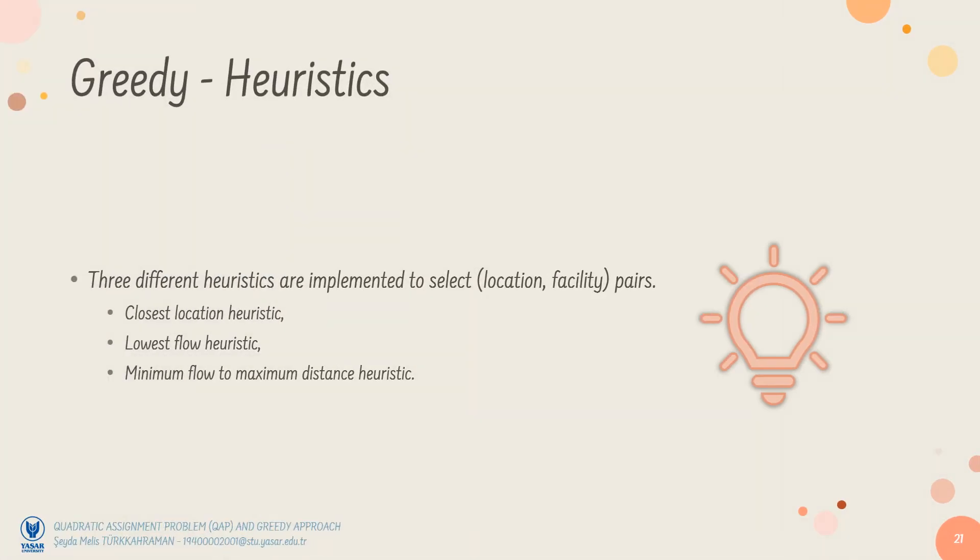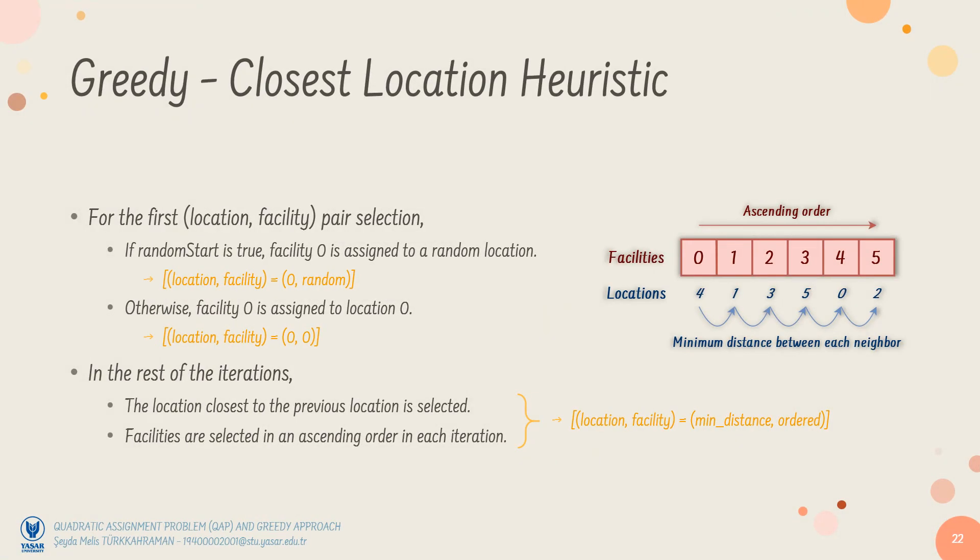I've implemented three different greedy heuristics. Let's go through one by one. In the closest location heuristic, facilities are selected in an ascending order, just like the indices of an array. And locations are selected such that two successive locations have the minimum distance. In other words, the closest location to previous location is selected in each step. If randomStart is allowed, then a random location is assigned to the facility 0. Otherwise, the facility 0 is assigned to the location 0.